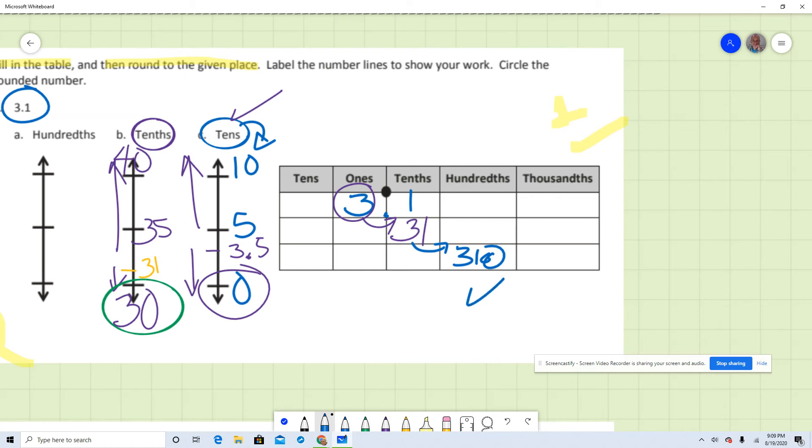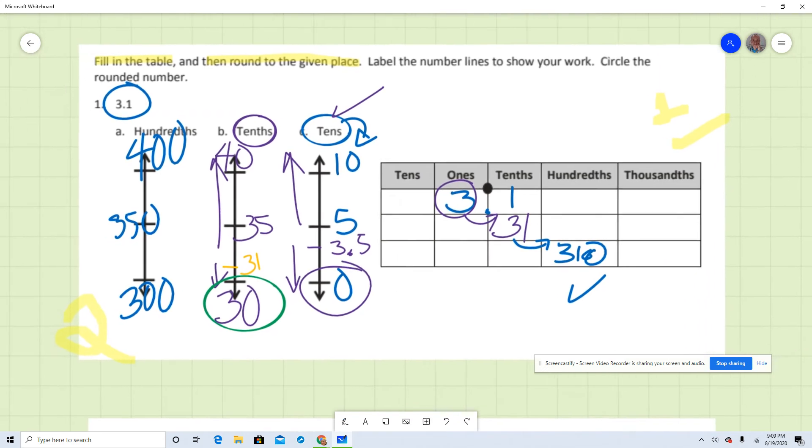Knowing that this is 310 hundredths, we can say that that number is between 300 and 400 and the midpoint between those two will be 350, as you can see.